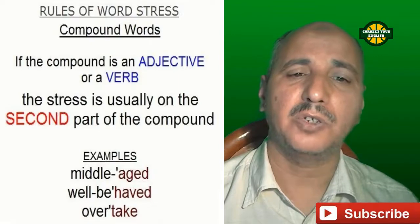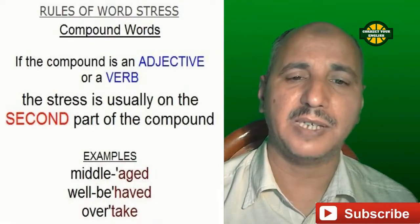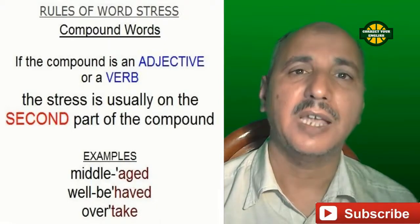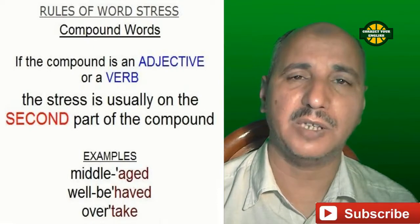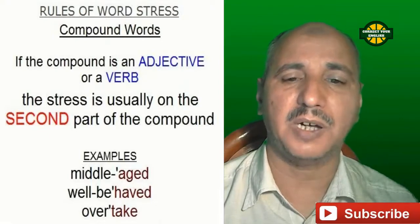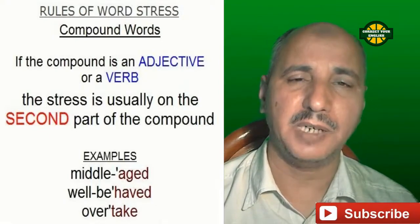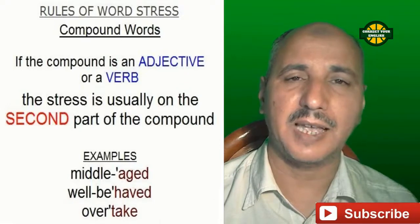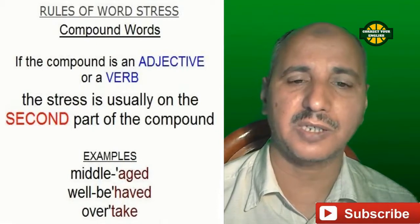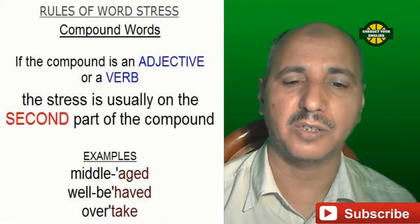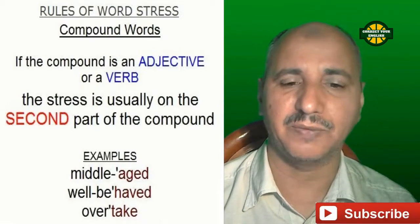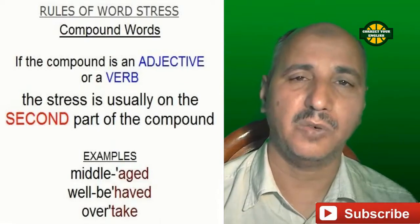Let's talk about compound words where the compound is an adjective or a verb, not two nouns. If the compound is an adjective or a verb, the stress is usually on the second part of the compound. For example: 'middle-aged' — 'middle' is an adjective and 'aged' follows, so we say 'middle-aged,' with stress on the second part. Also: 'well-behaved' and 'overtake.'